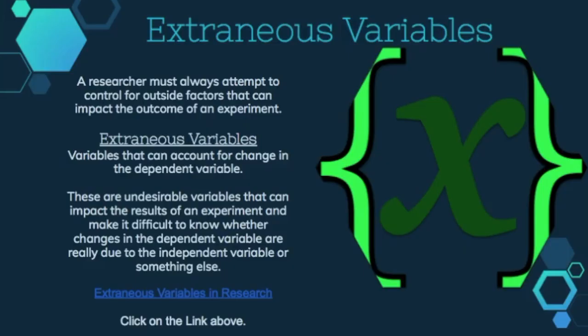Experimental research design depends on a researcher's ability to attempt to control for outside factors that can impact the outcome of an experiment. Extraneous variables are variables that can account for change in the dependent variable. These are undesirable variables that can impact the results of an experiment and make it difficult to know whether changes in the dependent variable are really due to the independent variable or something else entirely.